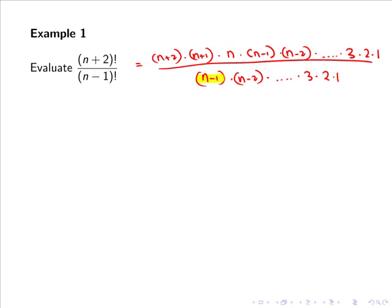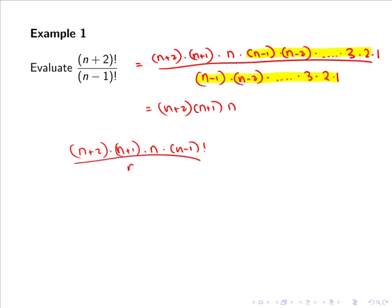So once again, the n minus 1, n minus 2, and all terms below are going to cancel, and we are simply left with n plus 2 multiplied by n plus 1 multiplied by n. Alternatively, we could have expressed n plus 2 factorial in terms of n minus 1 factorial as n plus 2 multiplied by n plus 1 multiplied by n multiplied by n minus 1 factorial, all divided by n minus 1 factorial, and like the last example, the n minus 1 factorials cancel, leaving us with n plus 2 by n plus 1 multiplied by n.